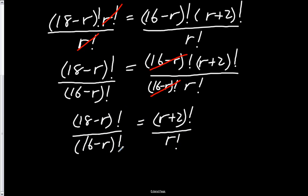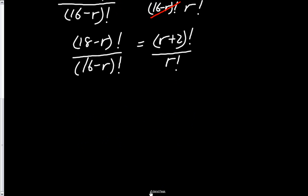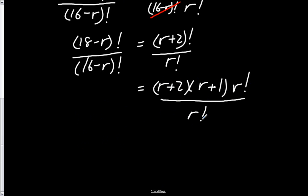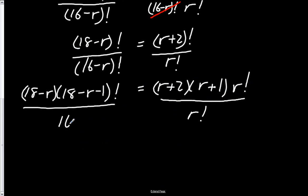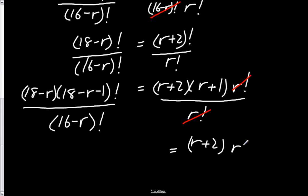That's the algebra part, and it's not obvious why to do that until you start to rewrite some of these factorial statements. Let me show you. (R plus 2) factorial can be written as (R plus 2) times (R plus 1) times R factorial, divided by R factorial. Once you write it that way, you can see you're getting rid of the factorial expression. On the other side, of course, R factorial divides out, and this reduces down to (R plus 2) times (R plus 1).